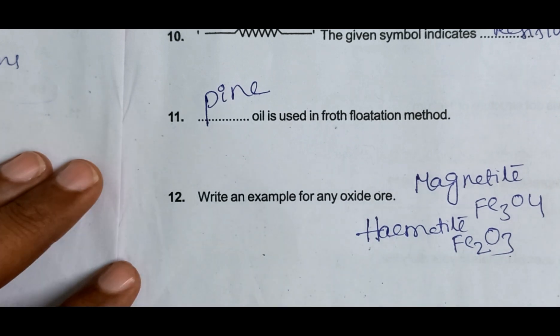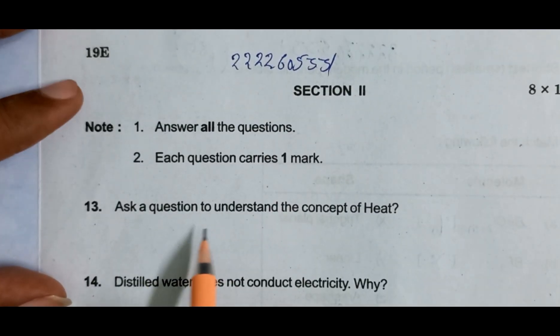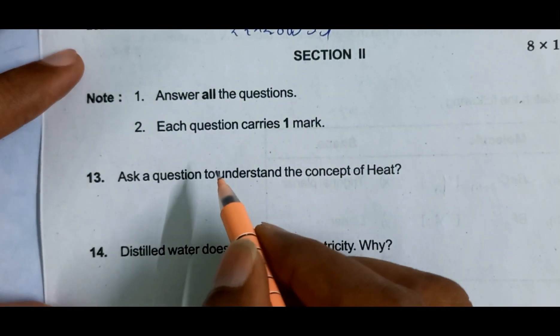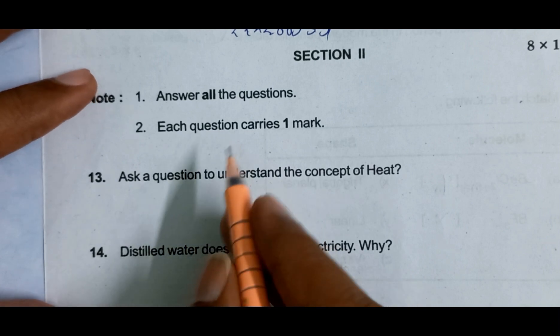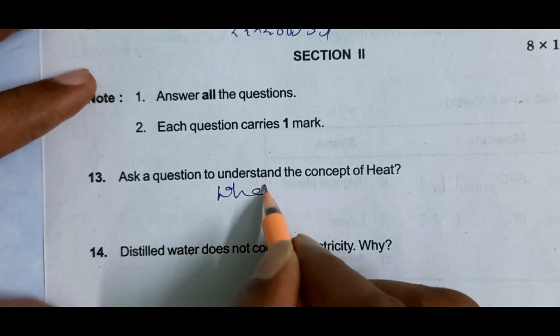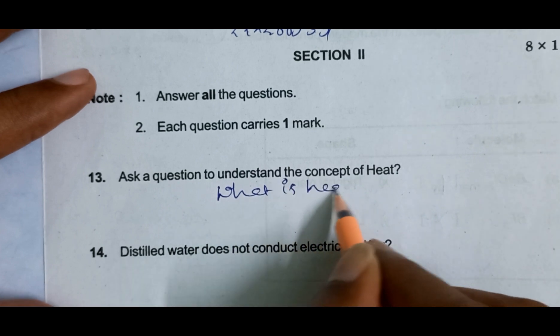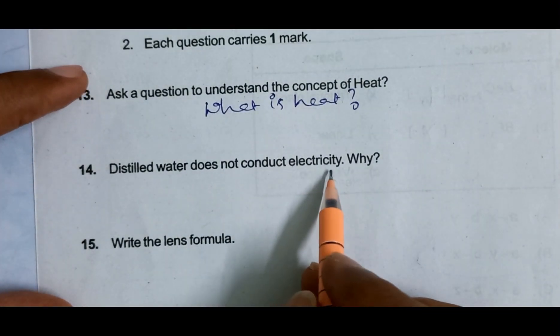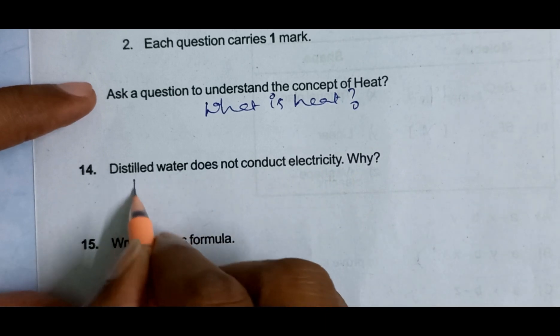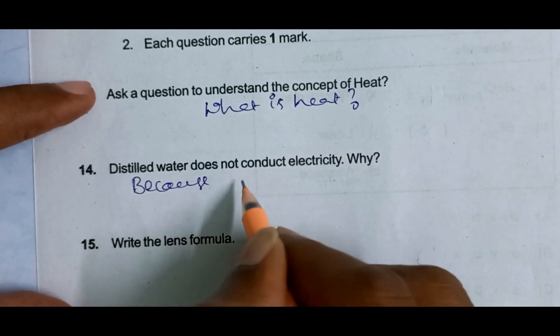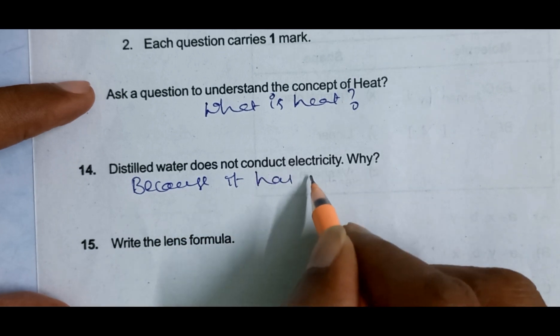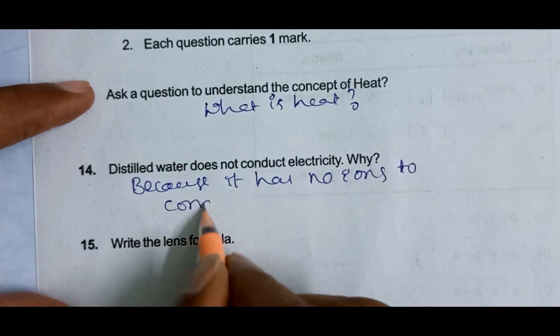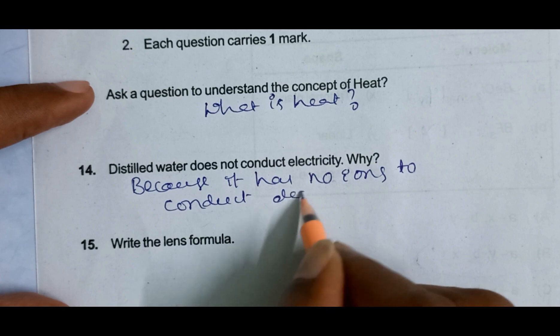Question to understand the concept of heat - one mark, simple: what is heat? Write a one mark answer. Distilled water does not conduct electricity, why? Because it has no ions to conduct electricity.